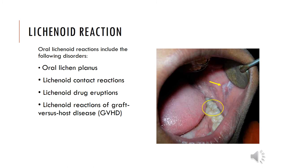This is a picture of a lichenoid reaction — white on the outside, red in the center, with grayish-purple areas, very difficult to distinguish from lichen planus. The only difference here is an amalgam restoration on the buccal surface of the molar, which could be the reason for this lichenoid contact reaction. The lichenoid spectrum involves oral lichen planus, lichenoid contact reaction, lichenoid drug eruptions, and lichenoid reactions of graft-versus-host disease.